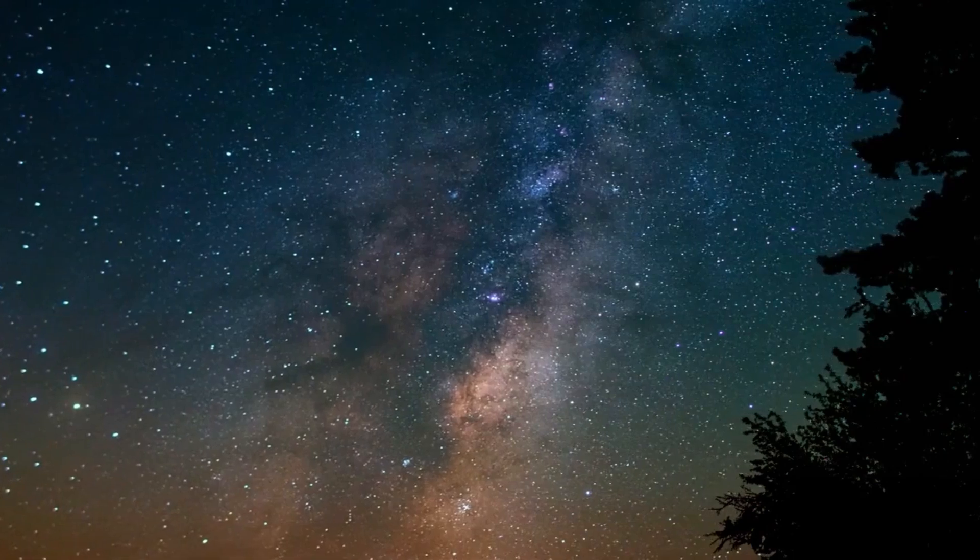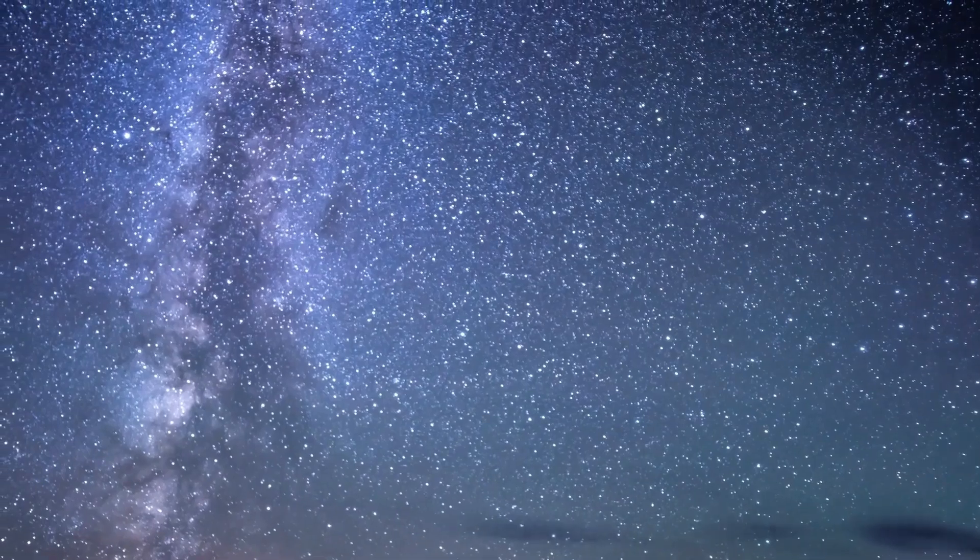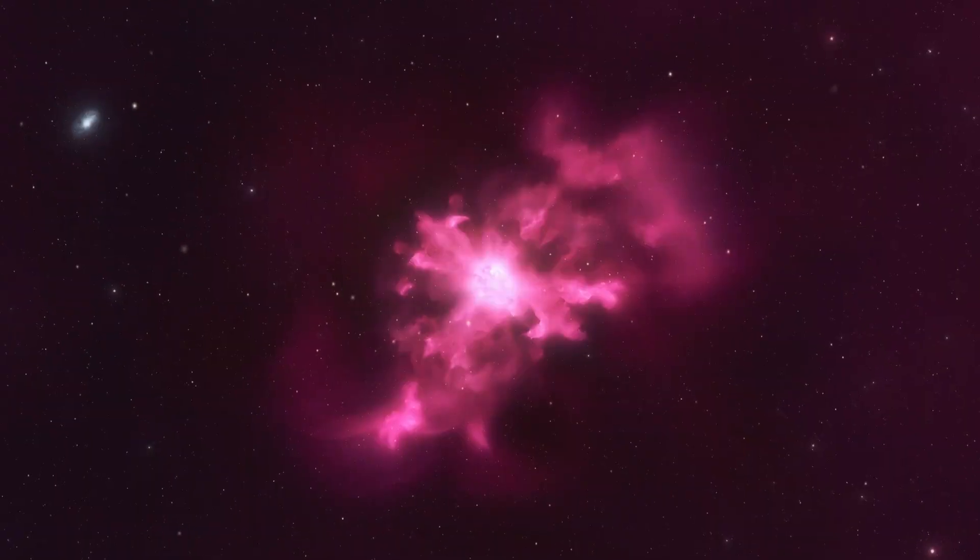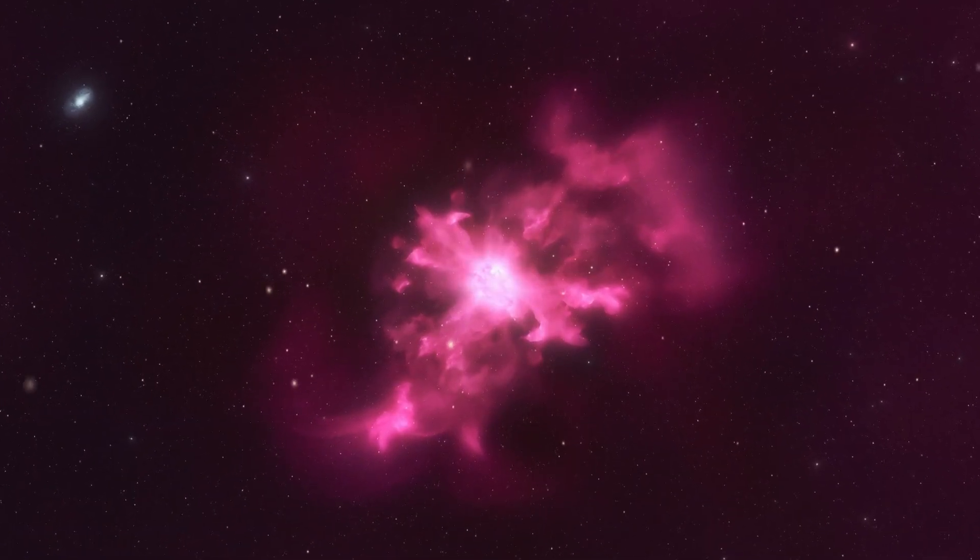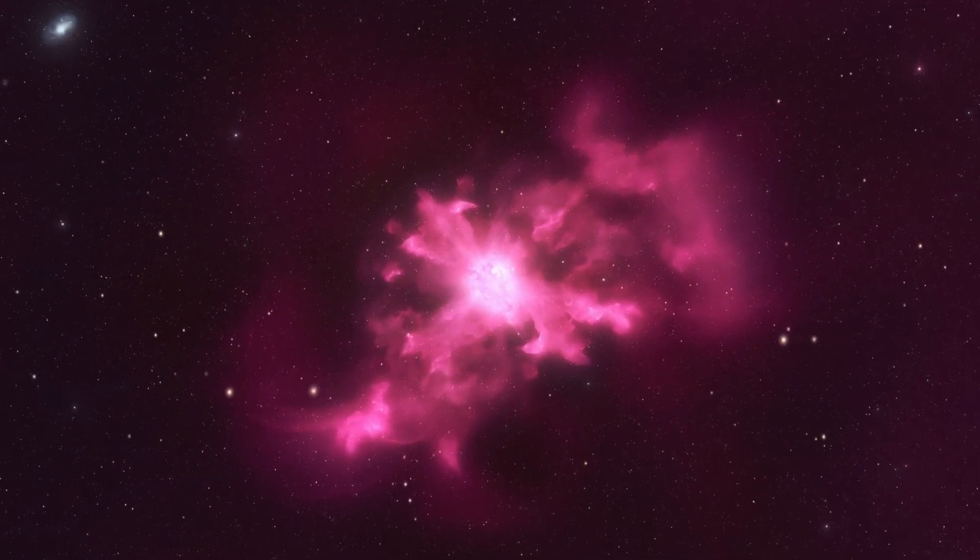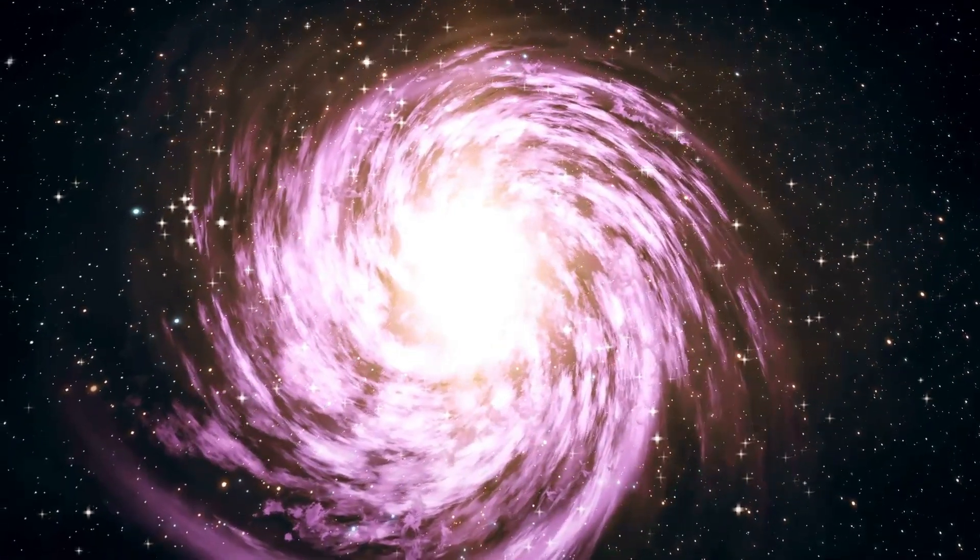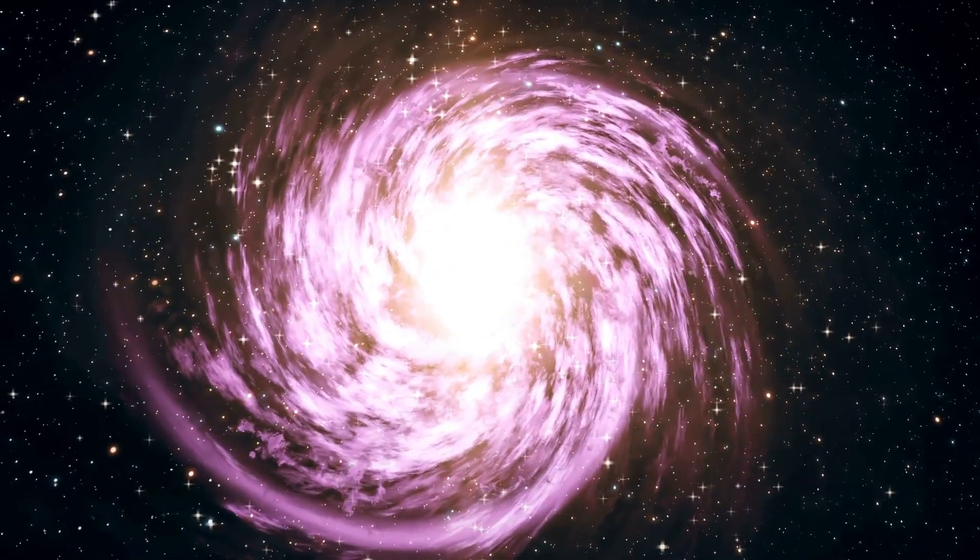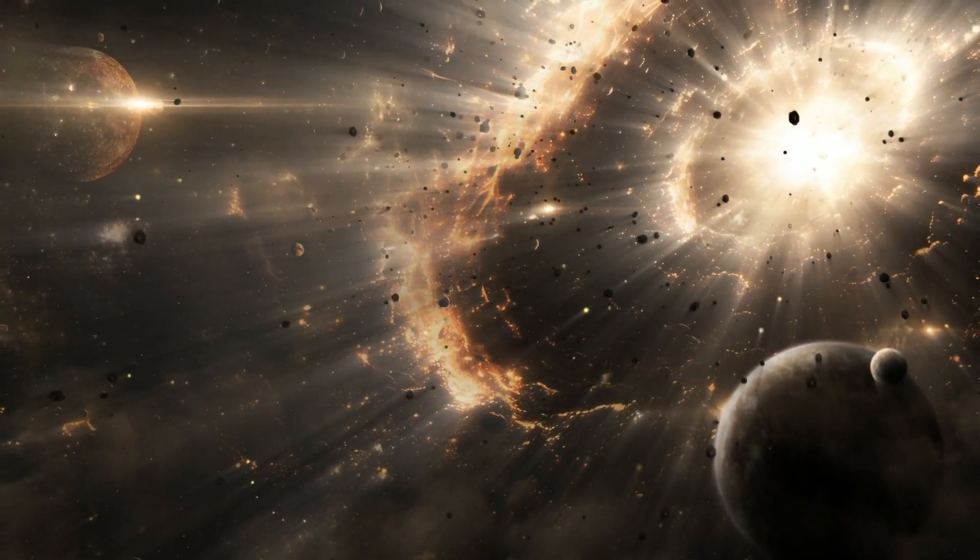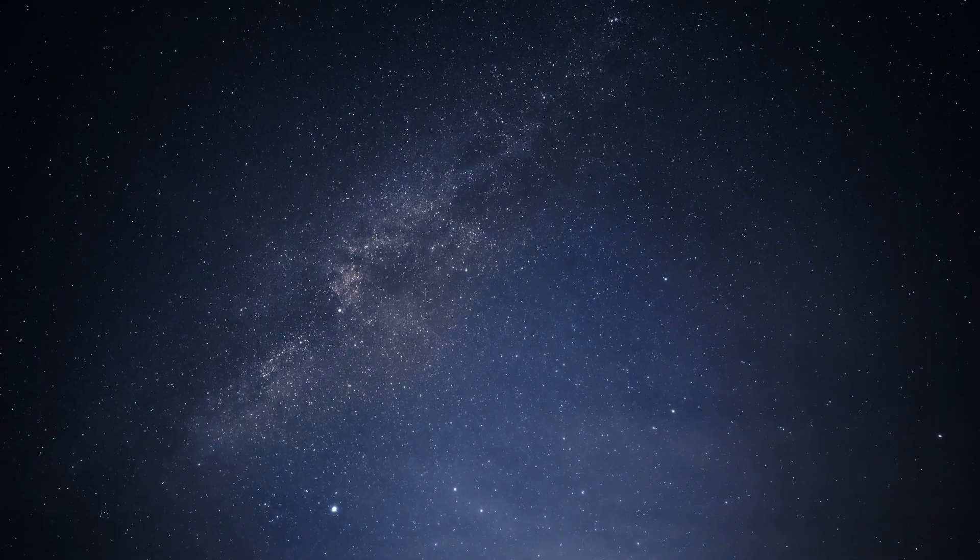Later observations have suggested that Betelgeuse may be in a late stage, or approaching the end of the core carbon burning cycle. This stage involves the conversion of carbon into heavier elements like oxygen and magnesium. If this is indeed the case, scientists predict a core collapse leading to a supernova explosion that could happen within a few tens of years. However, the exact phase of Betelgeuse's evolution remains difficult to determine, and uncertainties persist.